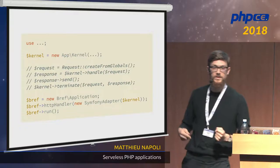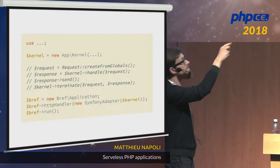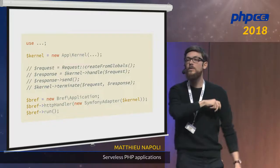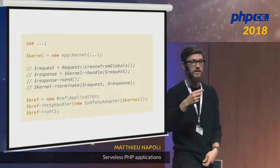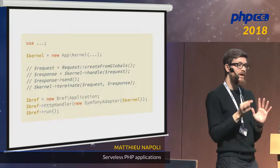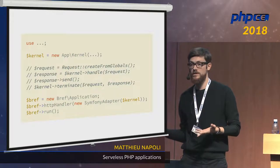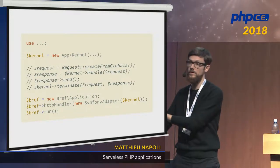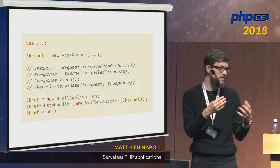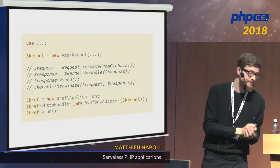I want to show the Symfony example. This is the index.php of Symfony — you create the Symfony kernel, and the commented part is the classic Symfony stuff: create the request, have the kernel handle the request, return the response. We remove all that because there is no HTTP request like in standard PHP anymore. What we do is create BREF and pass in the Symfony kernel to BREF. BREF will take the event — which represents the HTTP request — and turn it into a Symfony request. It's just converting from an array to an object. Then it calls the kernel, passes the request, and Symfony won't see any difference. BREF returns the response to Amazon, and that's it.